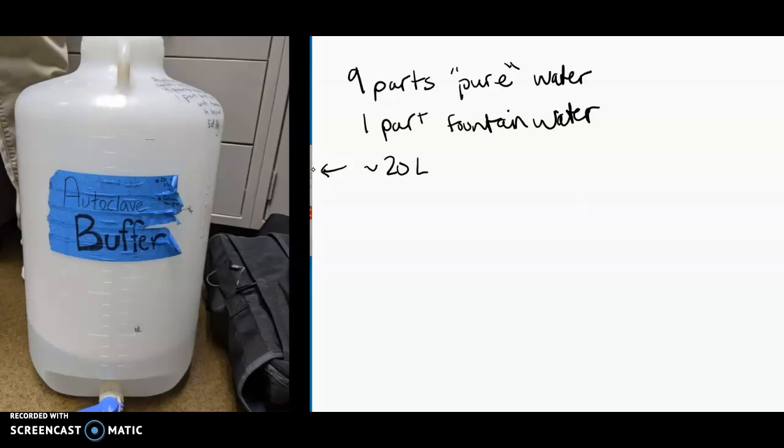then we need 9 parts of that to be pure and 1 part to be fountain water. So we figure out 9/10 of 20, which will give you your pure water, and 1/10 of 20 will give you your fountain water.